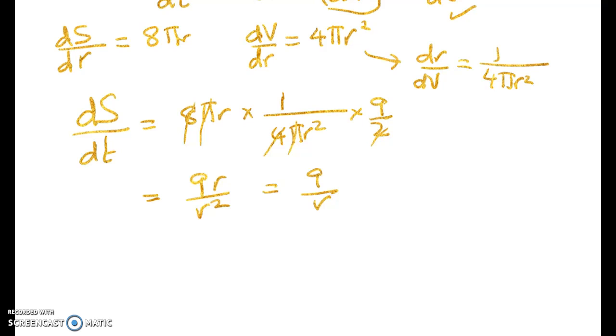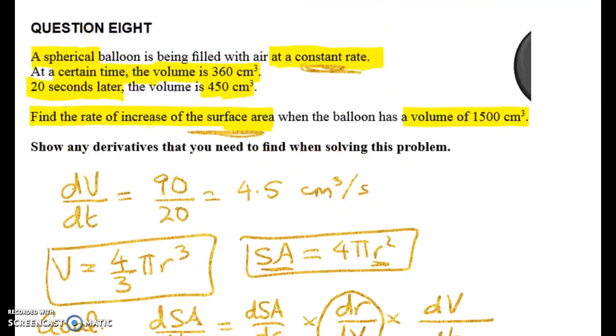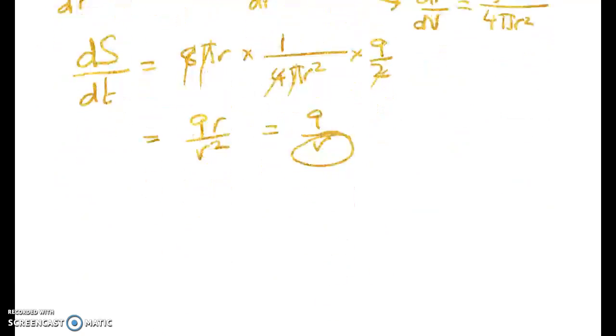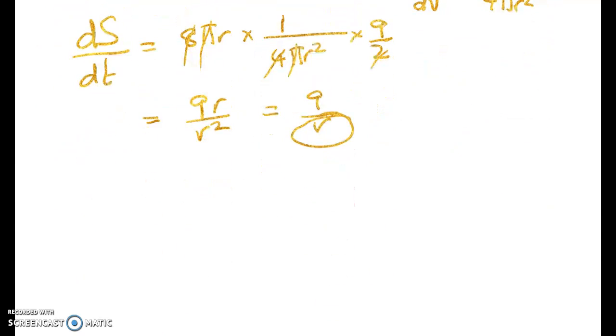All we have to do now is go back to the question and say well what r are we working with? We want to figure out the rate of increase when the volume is 1500 centimeters cubed. So we have to figure out what's the radius then. So that's our year 9 maths problem.